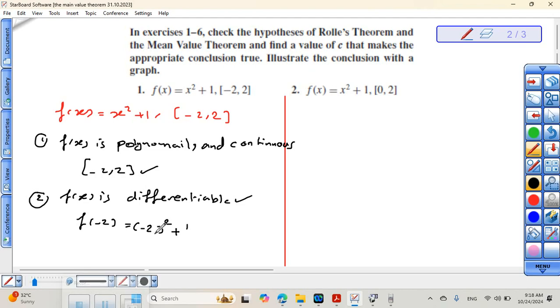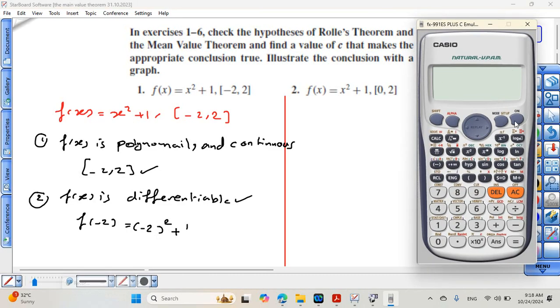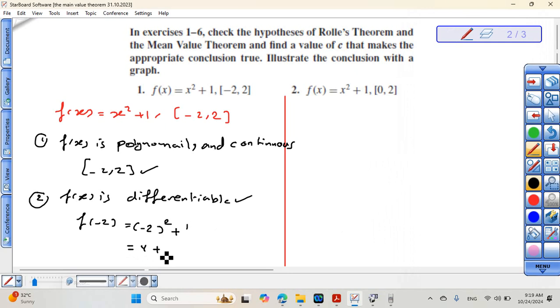There's a common misconception or mistake that most students make when using calculators. They write negative 2 like this without brackets. This is a big mistake. Negative 2 to the power of 2 equals negative 4, that's wrong. You should write negative 2 in brackets, then 2 power 2. The answer is 4. Be careful about this. This equals 4 plus 1, which equals 5.